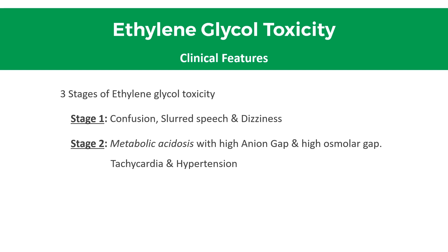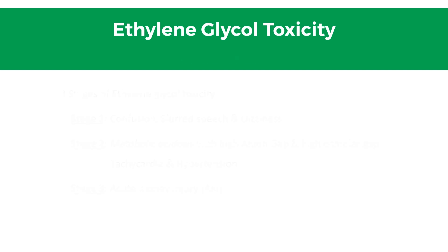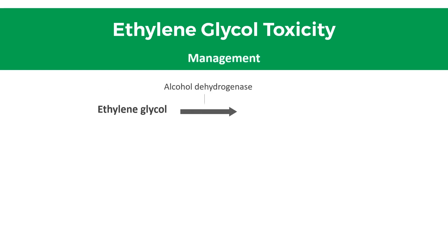In stage two, there is metabolic acidosis with high anion gap and high osmolar gap, along with tachycardia and hypertension. In stage three, acute kidney injury develops.